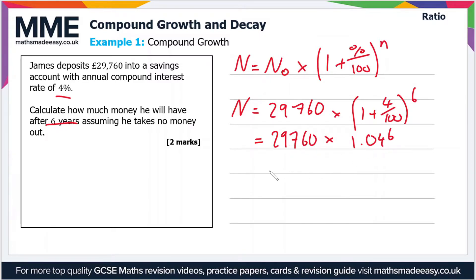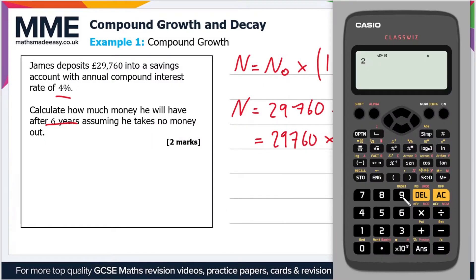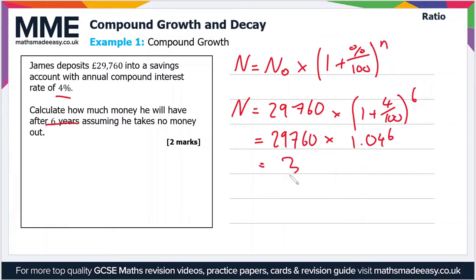So that's what we're going to put into the calculator: 29,760 times 1.04 to the power of six. That gives us £37,655.89. So that is the amount in the bank account after six years.